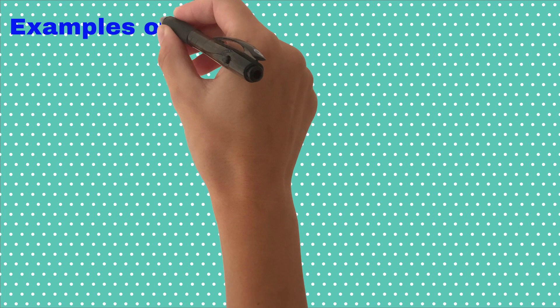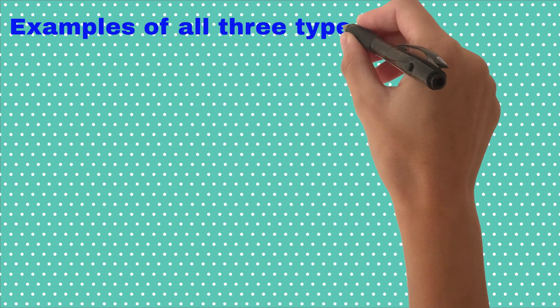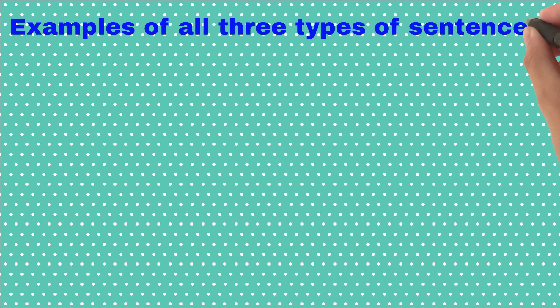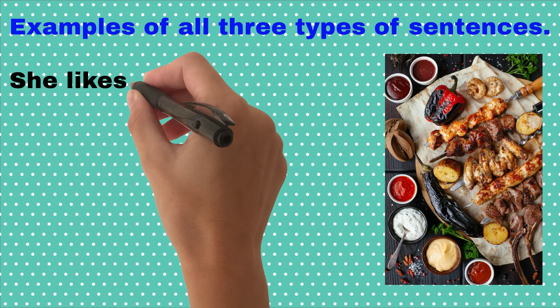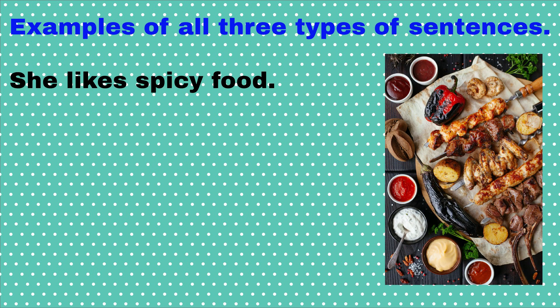Now, let us discuss examples of all three types of sentences of present indefinite tense. She likes spicy food. As she is a singular, we add es with the verb like.